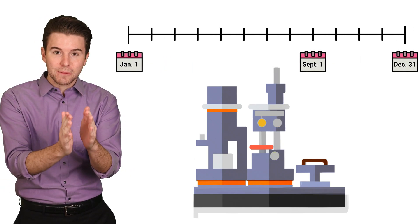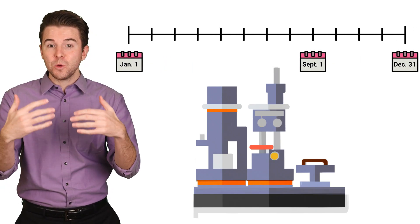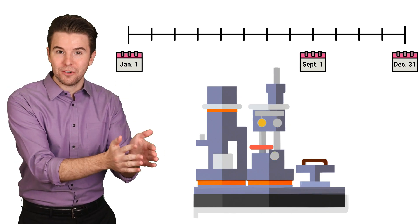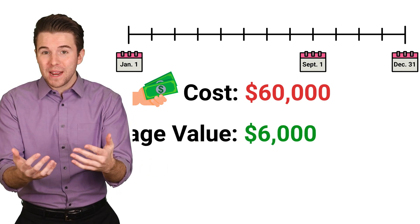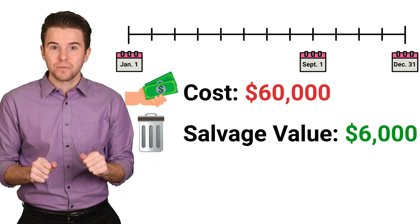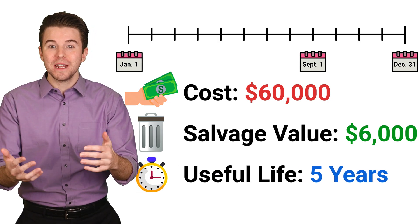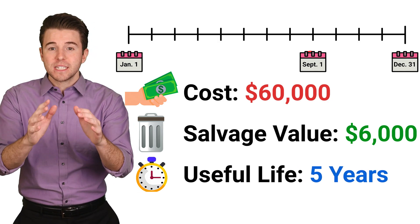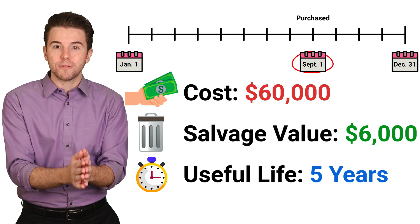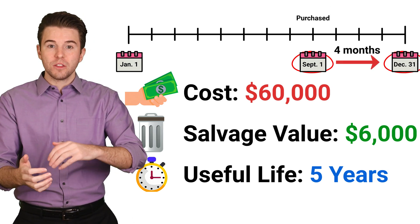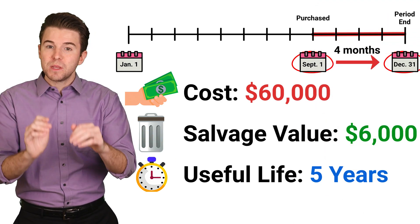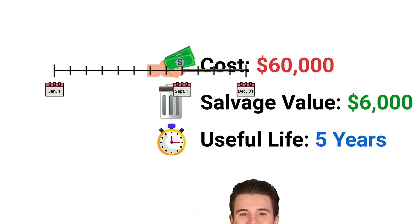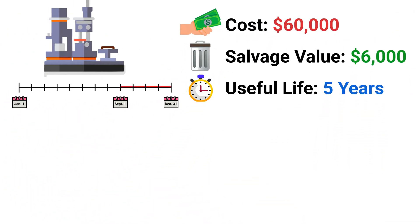For example, let's say a machine is purchased and placed in service on September 1st, and the annual accounting period ends on December 31st. The machine costs $60,000, the estimated salvage value is $6,000, and the useful life is estimated to be five years. Because this machine was purchased on September 1st and is used for four months until the end of the period on December 31st, we need to compute four months of depreciation.